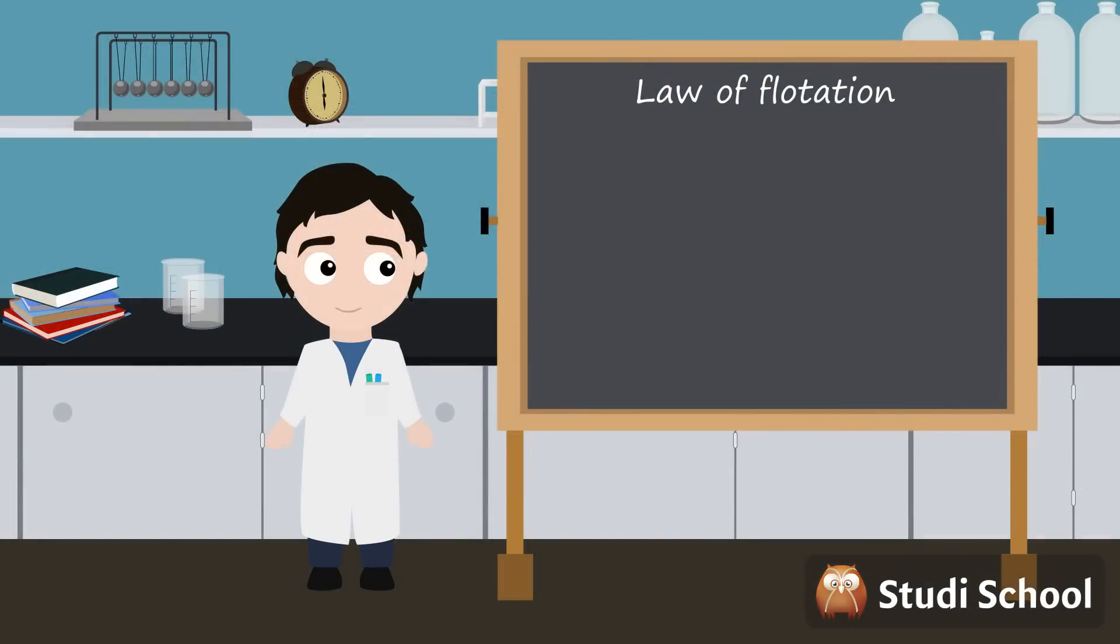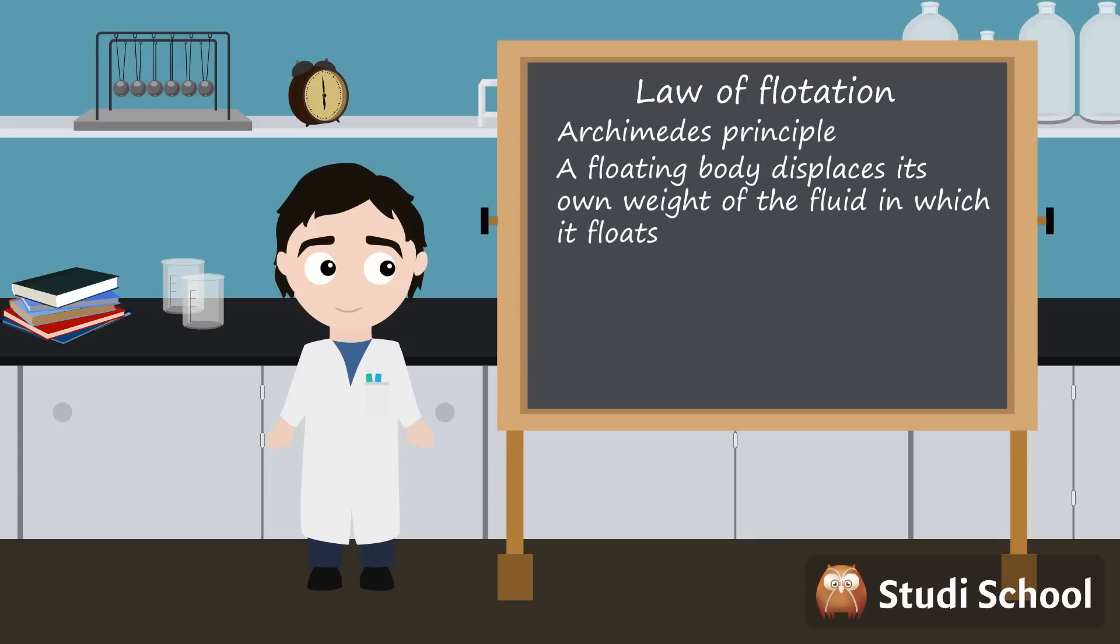Let's review what we've learned. We know that the law of flotation is derived from the Archimedes principle. The law of flotation states that a floating body displaces its own weight of the fluid in which it floats. This means that a 10,000 ton ship has to displace 10,000 tons of water in order to float. We call this the principle of flotation.